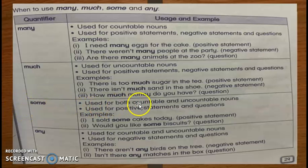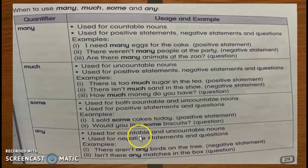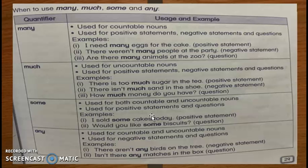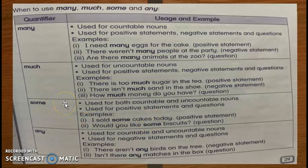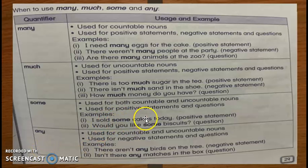Some — use for both countable and uncountable nouns. For example: I sold some cakes today. Would you like some biscuits? Some ni beberapa atau sedikit. Contohnya, can I have some sugar? — sugar is uncountable but some can still be used. Can I have some eggs? Can I have some water? Water — boleh digunakan some because some boleh guna untuk countable dengan uncountable.